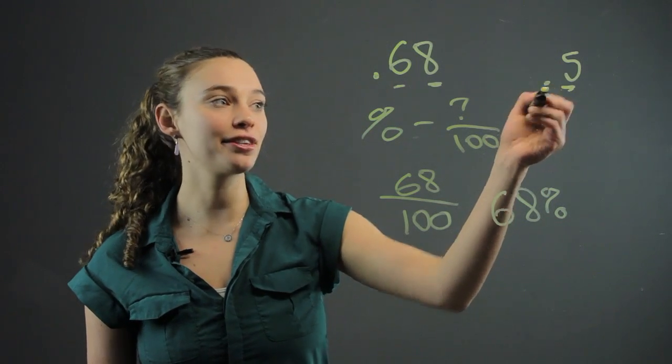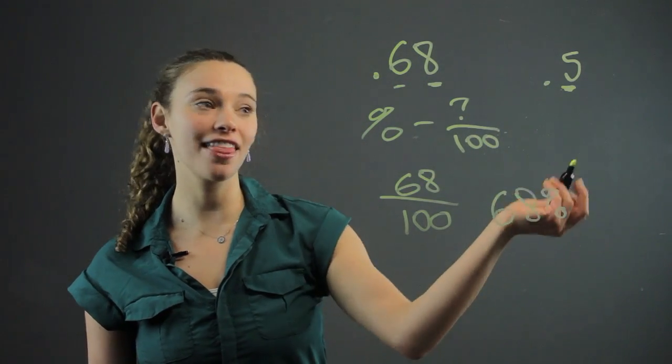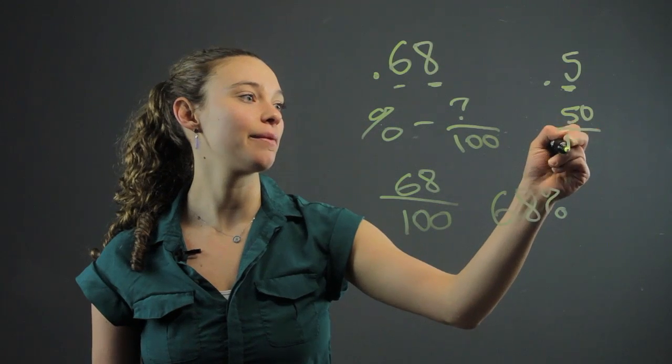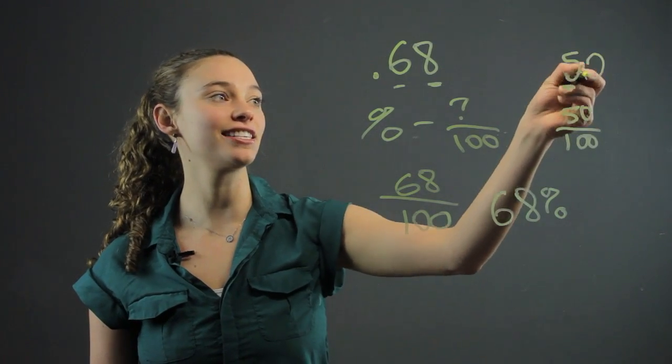But really, this is the tenths place. So that's 5 tenths, which is 50 over 100. You can just add a zero here.